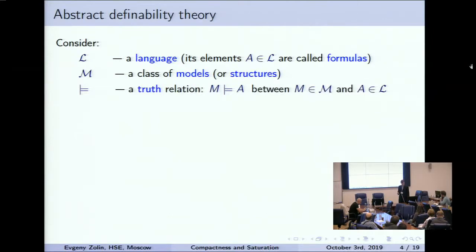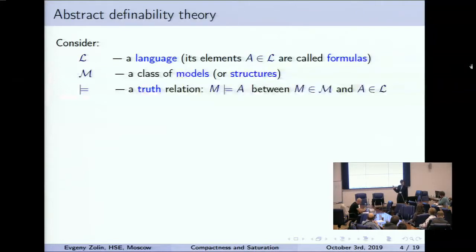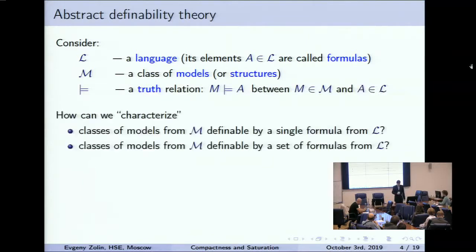We can formulate this more generally, more abstractly — not for first-order language and first-order structures, but for arbitrary language and arbitrary structures. Consider the situation: we have some language that is just a set, its elements are called formulas, some class of models or structures, and a truth relation between models and formulas. We are interested in which classes of models are definable by a single formula, by a set of formulas, and two more options that form a nice picture.